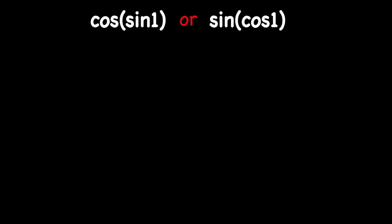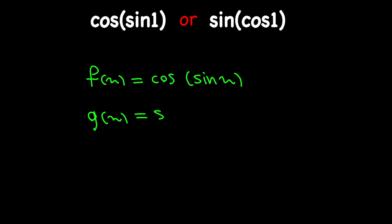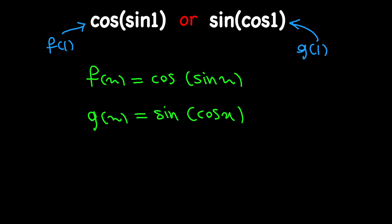In order to compare these two numbers, we need to compare two functions. Let's say f of x equals cosine of sine of x, and g of x equals sine of cosine of x. So what we want to do is compare f of 1 with g of 1. And in order to do that, we need to compare f of x with g of x.